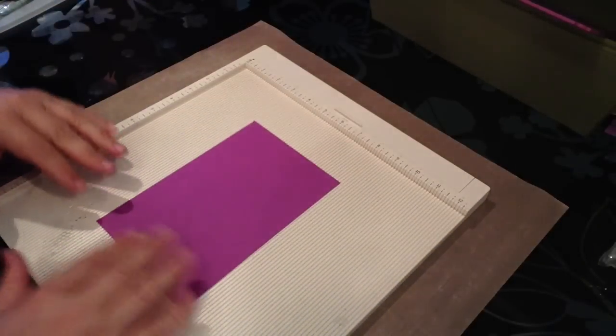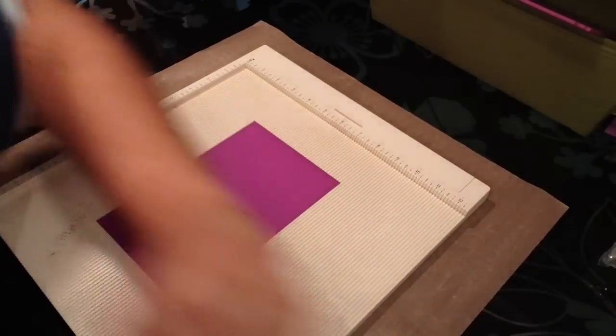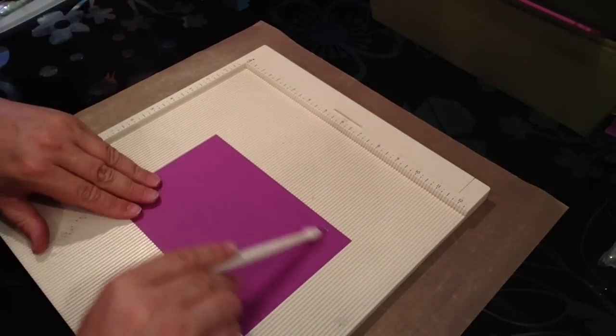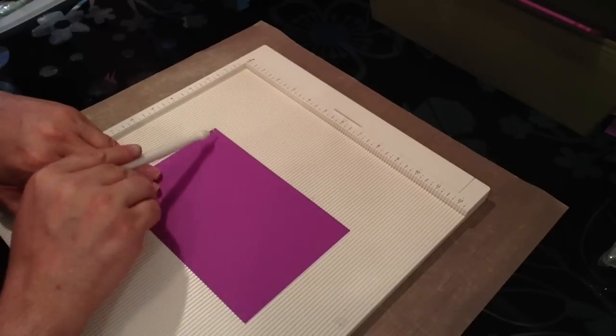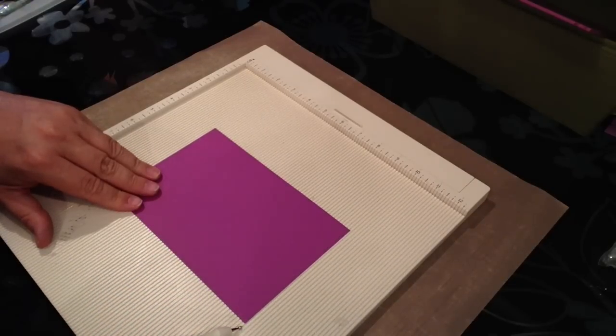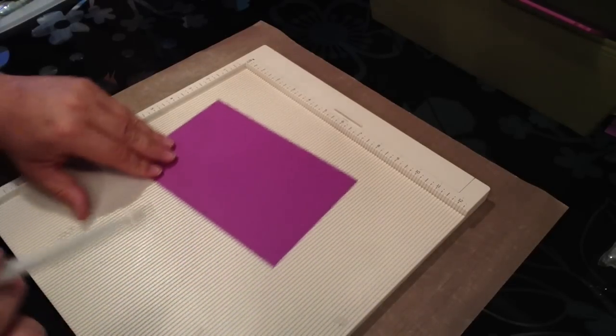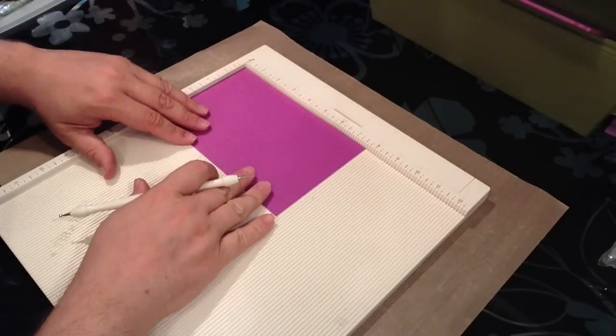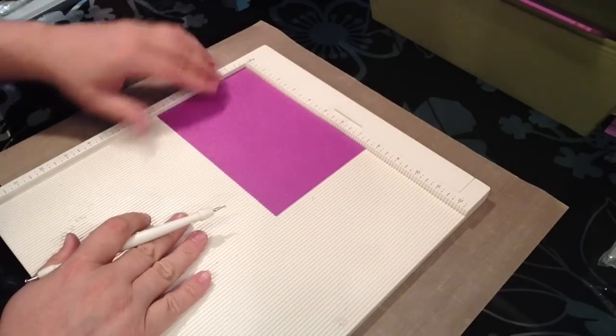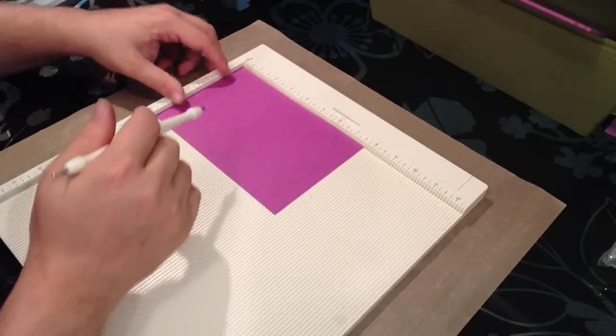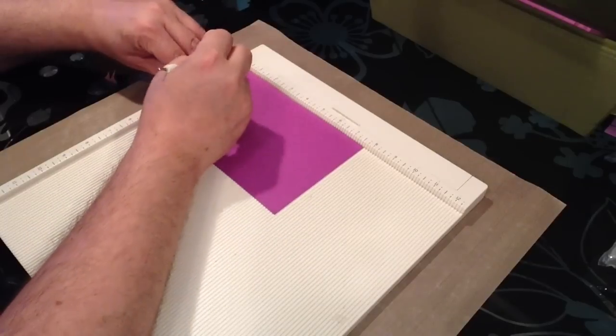I'm going to use a scoreboard and we're going to start off with a piece of paper that is seven and five-eighths by five inches. I'm going to start on the long side, the seven and five-eighth inch. This is a Martha Stewart scoring tool and I'm going to score at half an inch.